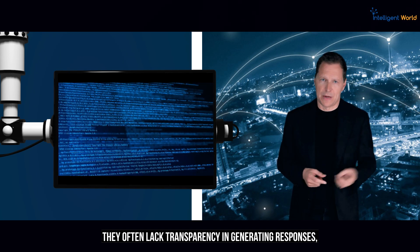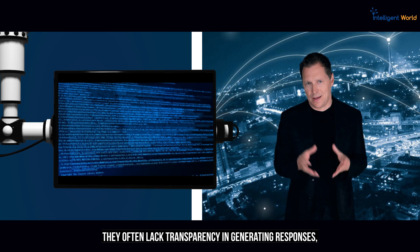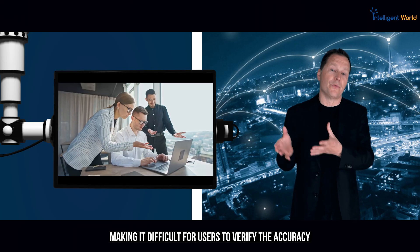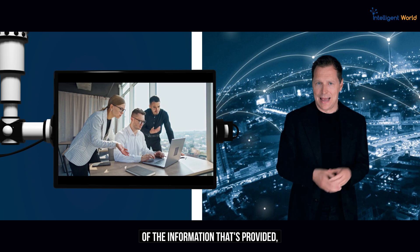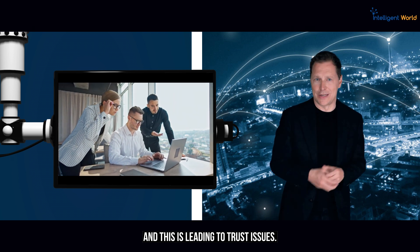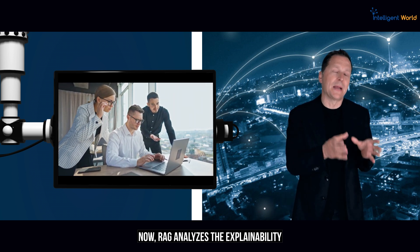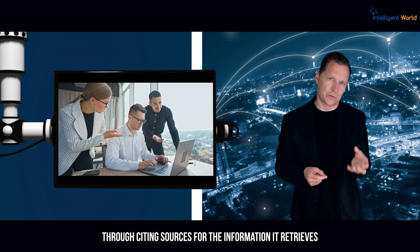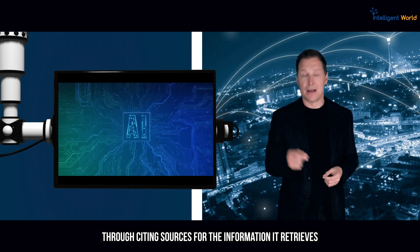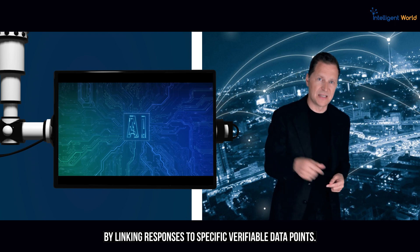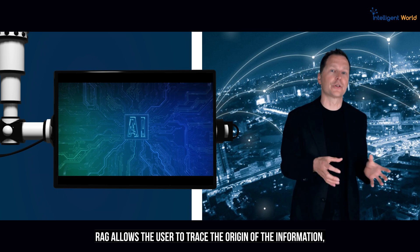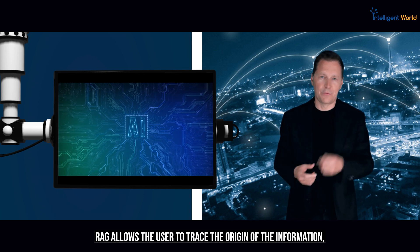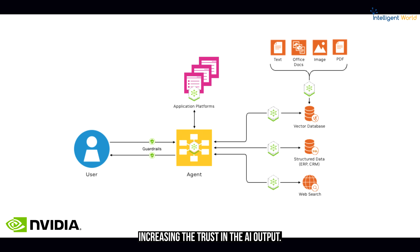Traditional LLMs often lack transparency in generating responses, making it difficult for users to verify the accuracy of the information provided — leading to trust issues. RAG enhances explainability by citing sources for the information it retrieves, linking responses to specific verifiable data points and allowing users to trace the origin of the information, increasing trust in the AI output.